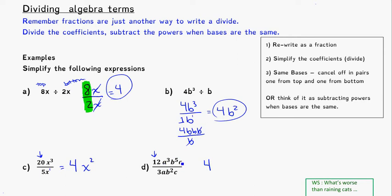Now let's look at all our variables. So we'll only compare ones that are the same. So let's look at first the a's. I've got 3 a's on top and 1 a on bottom. So if I take 1 off the top and 1 off the bottom, I'll be left with 2 a's.